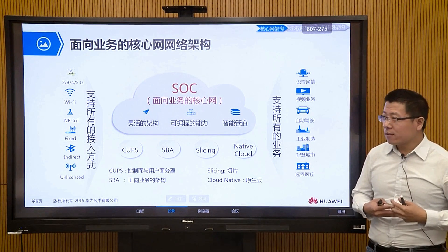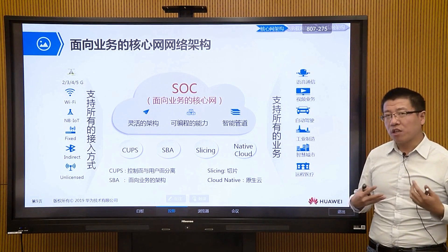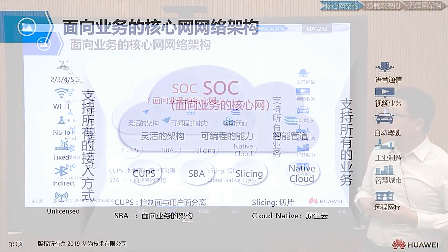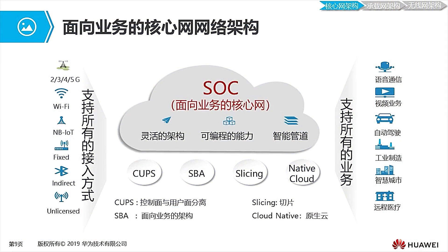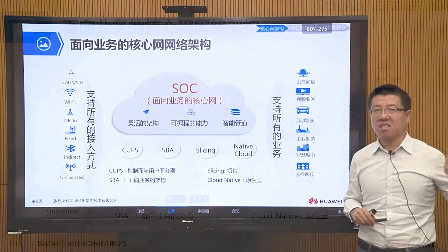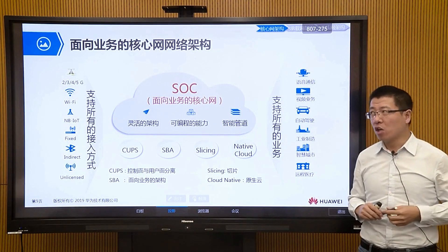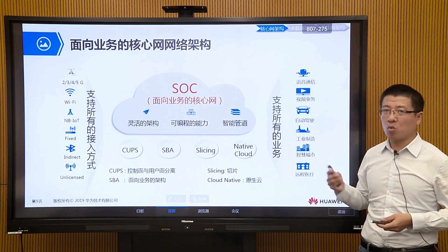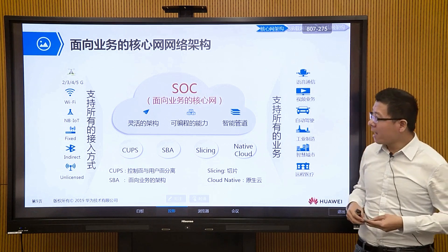In 5G networks, the changes in the core network are quite significant. We have a concept called service-oriented core network architecture — the design of our entire core network is business-oriented. We need to support the requirements of future differentiated vertical industries and their businesses, so we designed this new service-oriented core network architecture.